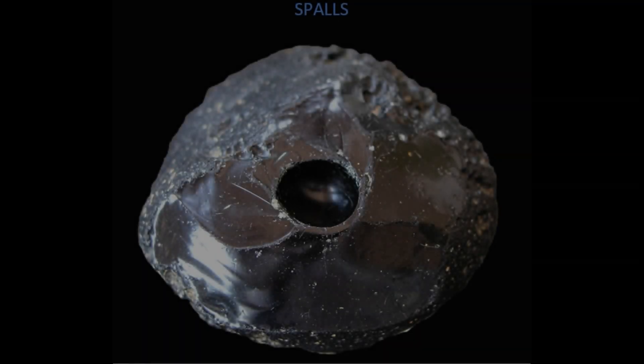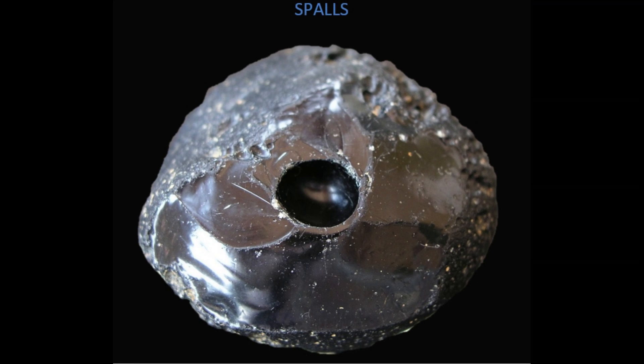Spalls are flakes of material broken or knocked off a larger solid body. Spalls are often missing, while the footprint remains on the larger body.